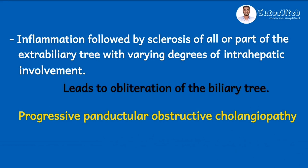Some books define biliary atresia as a progressive panductal obstructive or obliterative cholangiopathy. To break this down: 'cholangiopathy' means a disease of the bile ducts; 'obstructive or obliterative' means the disease is characterized by blockage; and 'progressive panductal' means the obstructive disease affects the entire biliary tract in a progressive way.